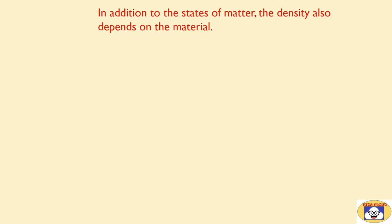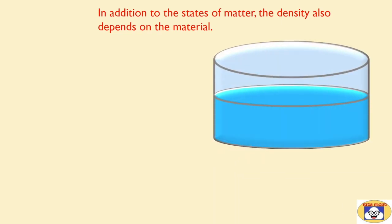In addition to the states of matter, the density also depends on the material. In chemistry, the density of a substance is often expressed relative to the water. A denser substance will sink while less dense will float in water. With a simple experiment it's easy to find out whether the substance is denser or less relative to water.